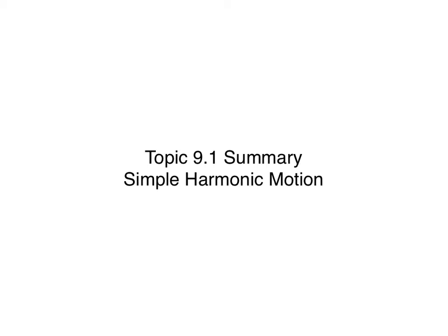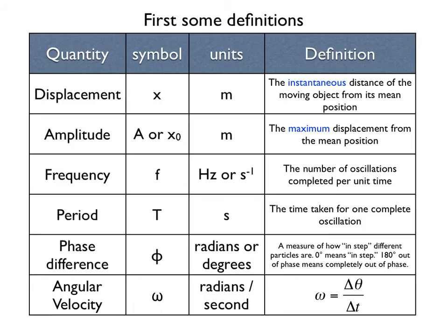Topic 9.1 summary: simple harmonic motion. We've already looked at simple harmonic motion in topic 4, but now we're going to look at it a bit more quantitatively. This is a table that you should become familiar with as we study simple harmonic motion. It shows some of the quantities, symbols, and units involved in measuring simple harmonic motion of an object.